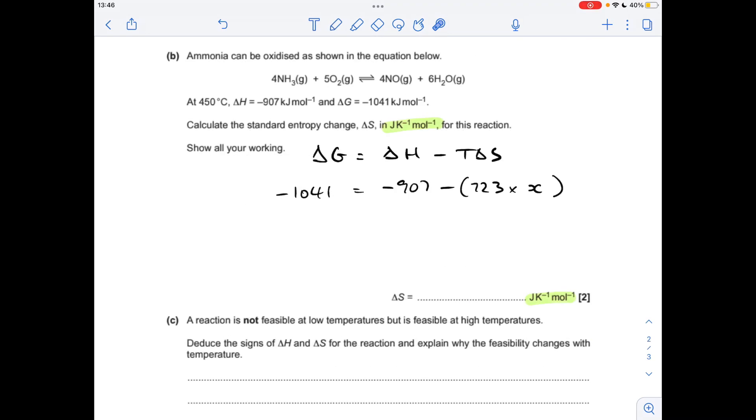Moving on to the calculation, obviously we're going to use the delta G equation and use the values given to get a value for the entropy change delta S. Just be careful with your units. So you can see delta S is in joules per Kelvin per mole. The delta H and the delta G have both been given in kilojoules per mole.